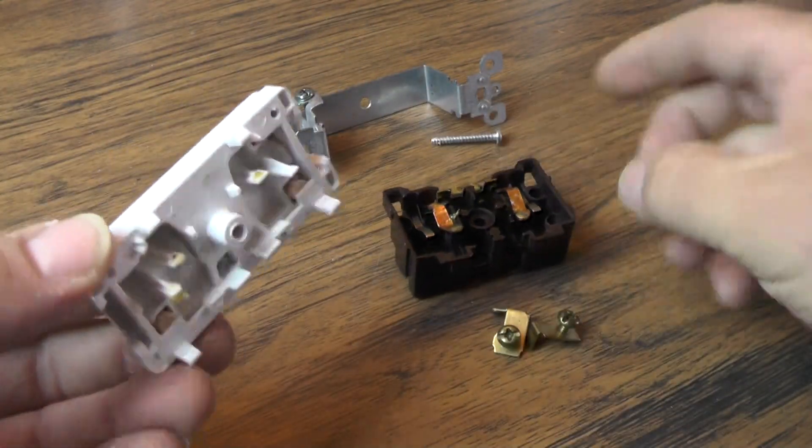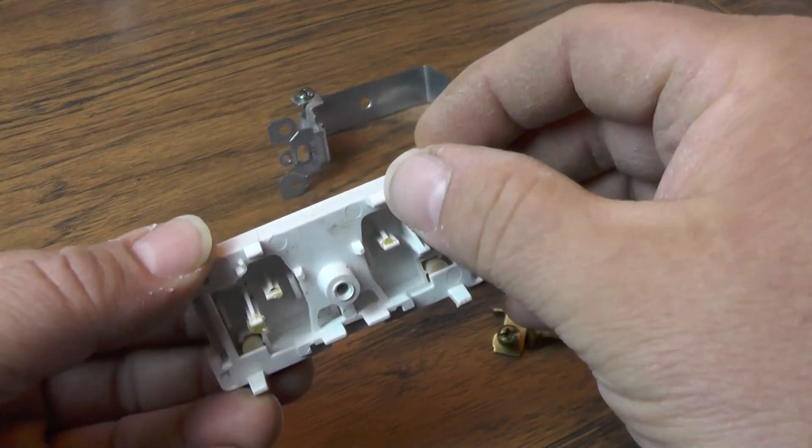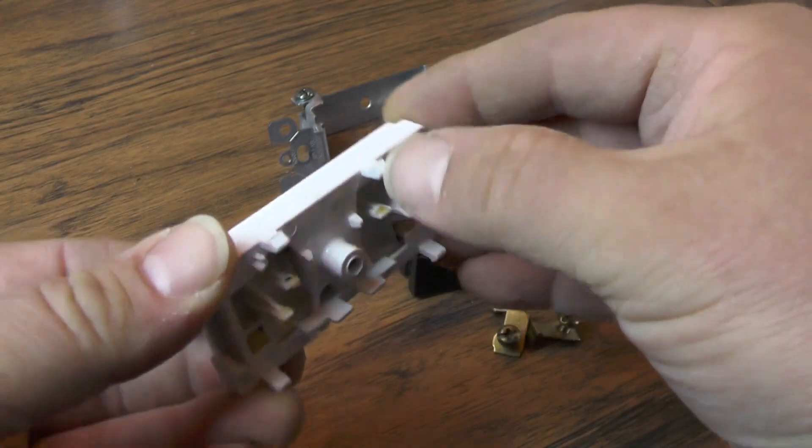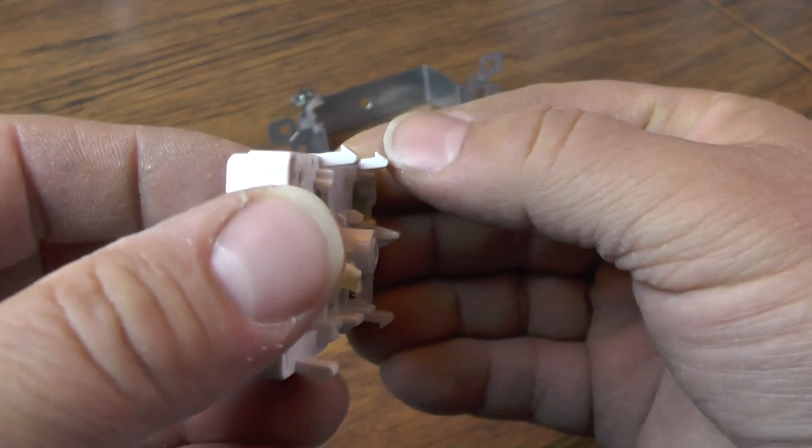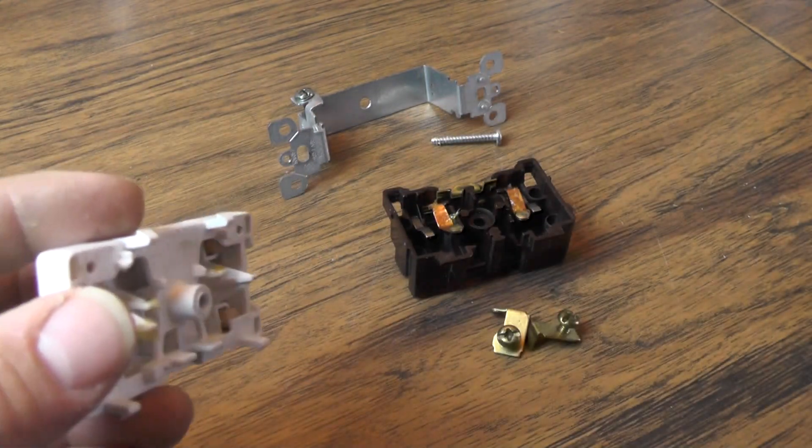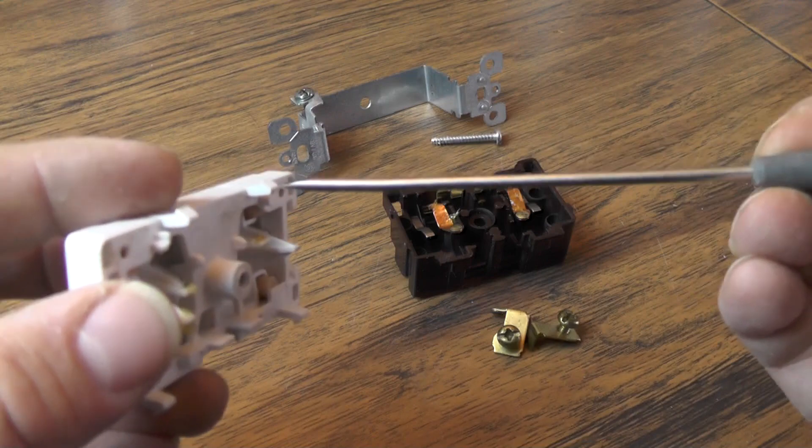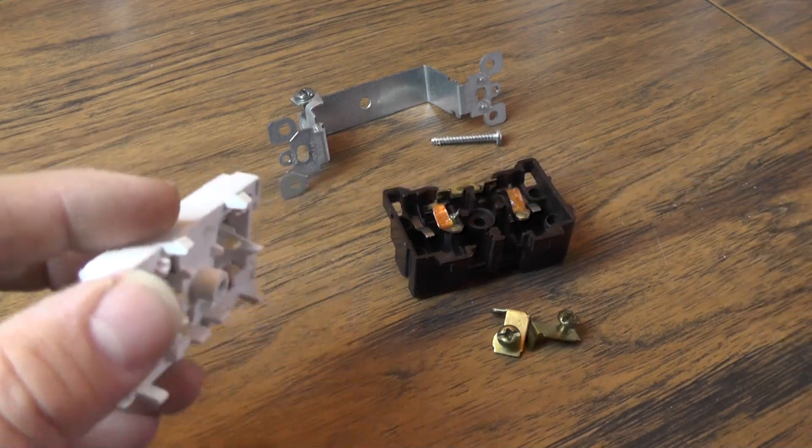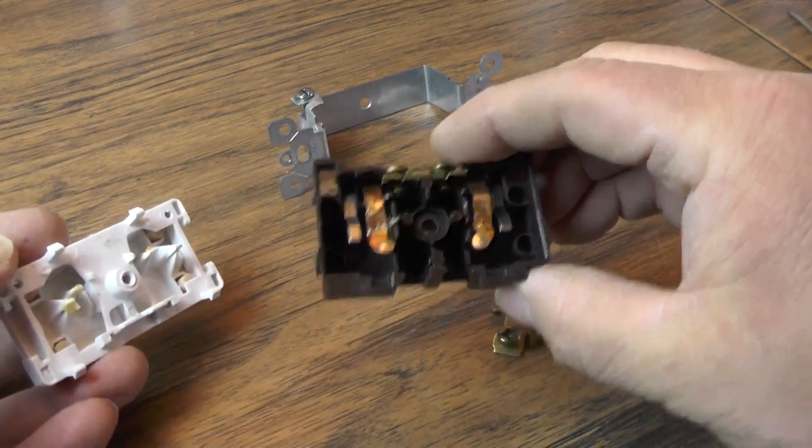This style switch is not sonically welded so it has these little movable clips right here. You just got to basically bend them over. I just used a small flat screwdriver to bend those tabs over and pop them out of the switch frame.